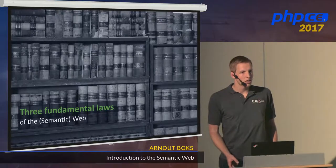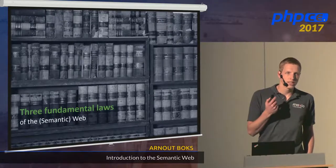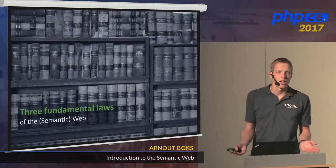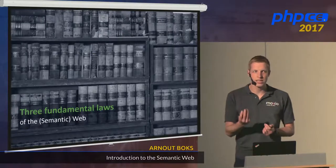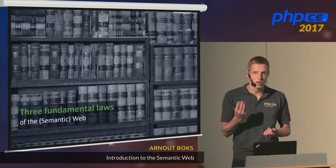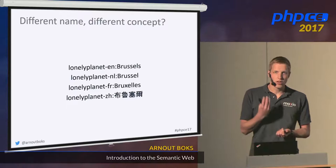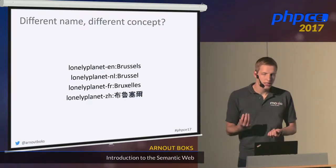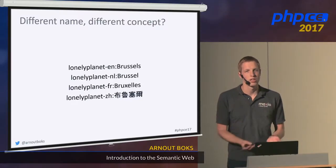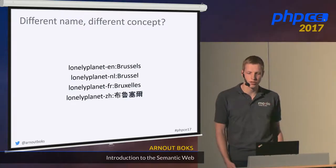There are three fundamental laws of the Semantic Web — actually they're not tied to the Semantic Web only, but about data on the web. Because the web is so messy and vast, you need to take some things into account when working with web data. The Semantic Web formalizes these laws into formal statements and tries to embrace the messiness of the web.